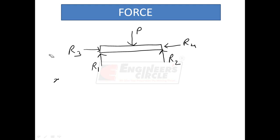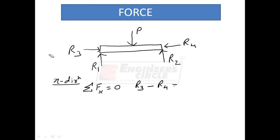First, we will consider the X direction. According to Newton's second law, the net force in the X direction on this body must be zero because this body is in equilibrium. Therefore, we can write R3 minus R4 must be equal to zero.